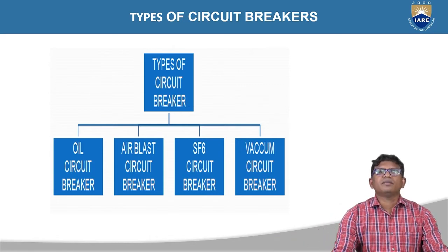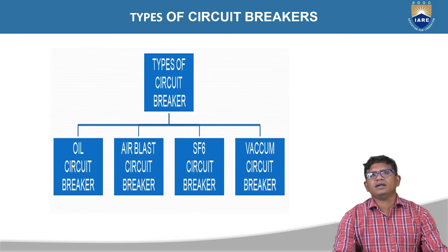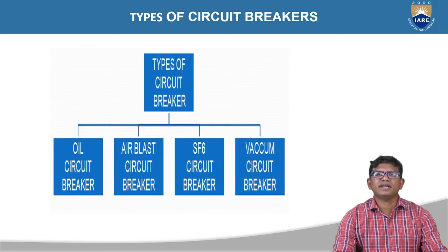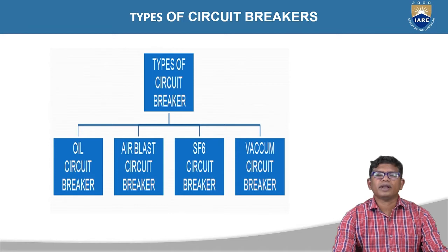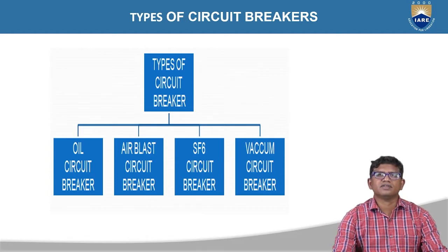If the breaker contacts are operated in oil, it is classified as an oil circuit breaker. Based on the insulating fluid, the circuit breaker can operate in oil, air, SF6 gas, or vacuum. So the four types are: oil circuit breaker, air blast circuit breaker, SF6 circuit breaker, and vacuum circuit breaker.